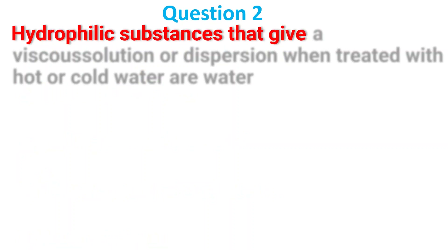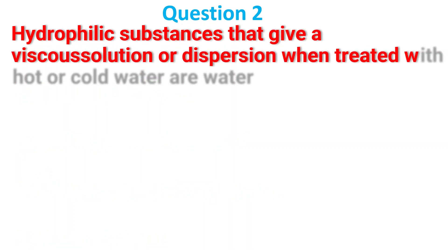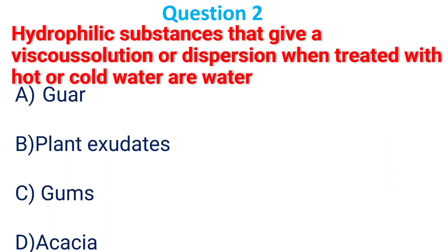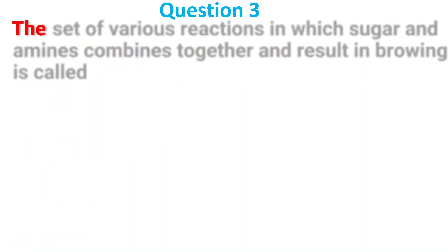Hydrocolloid substances that give viscous solution and dispersion when treated with hot and cold water: A. Gore; B. Starch; C. Gum; D. Acacia. The answer is C, gum.